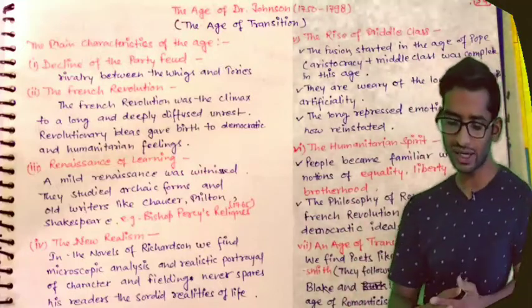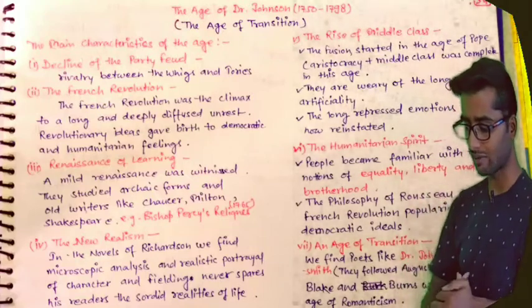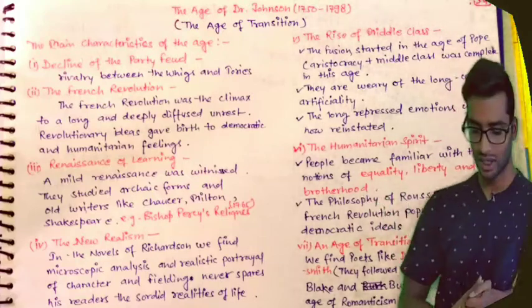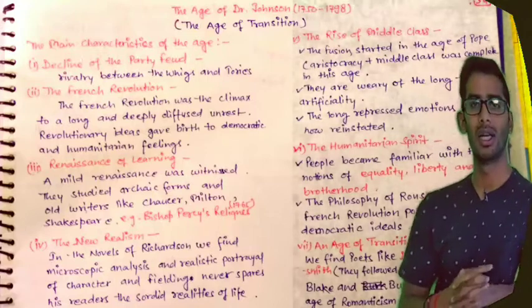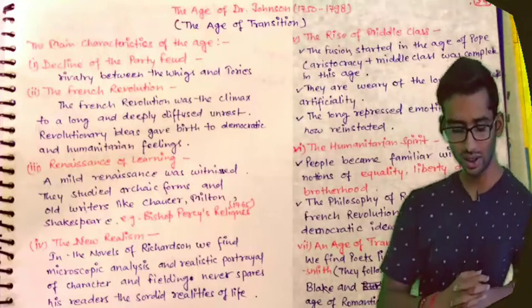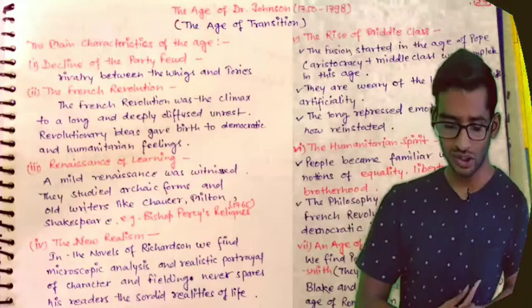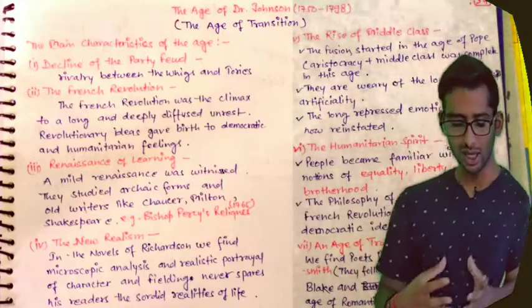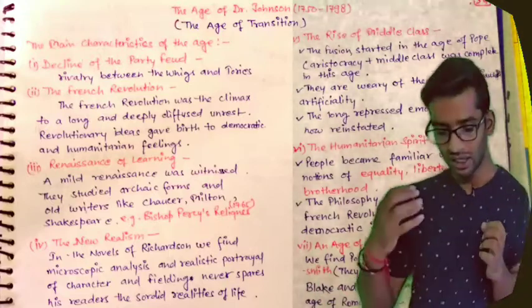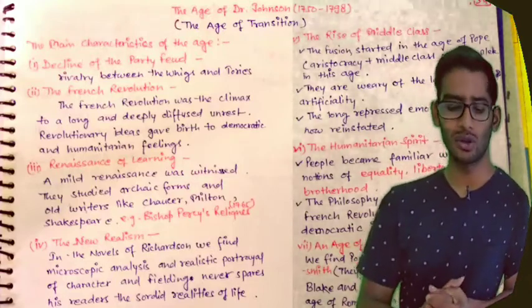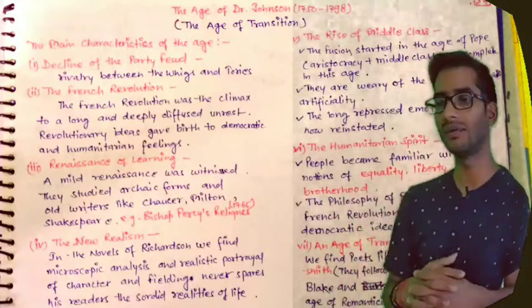We find poets like Dr. Johnson and Goldsmith who followed the Augustans slavishly, and poets like Blake and Burns who herald the new age of Romanticism. Gray and Collins were the true transitional poets of that time — we can call Thomas Gray and Collins true transitional poets. They share both the romantic and classic characters, as the 18th century is also called the neoclassic time, and Gray and Collins had characteristics of both classic and romantic writers.